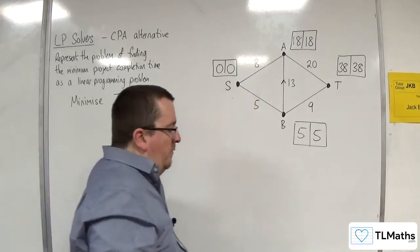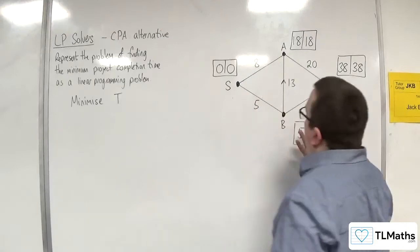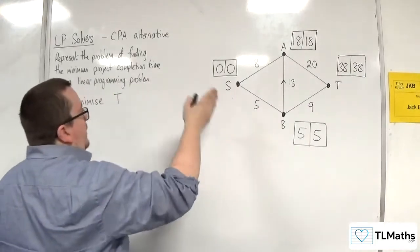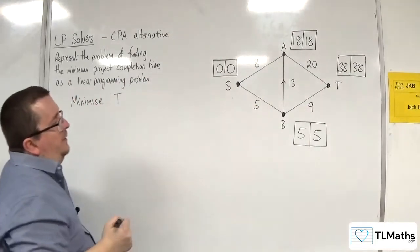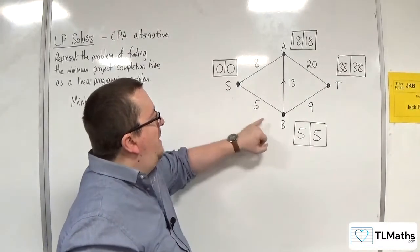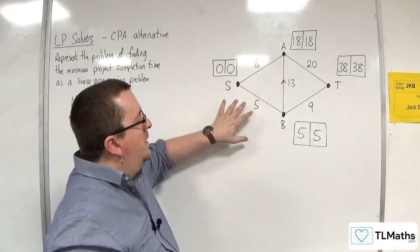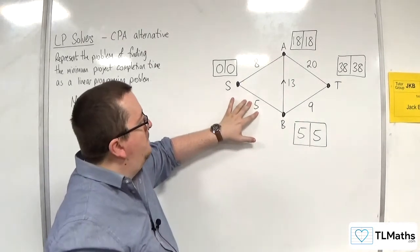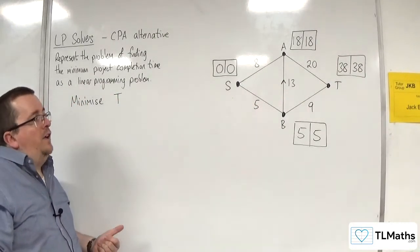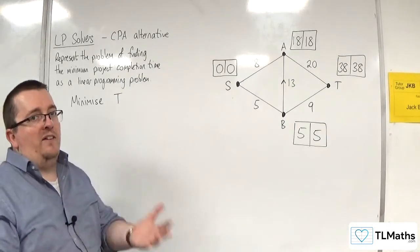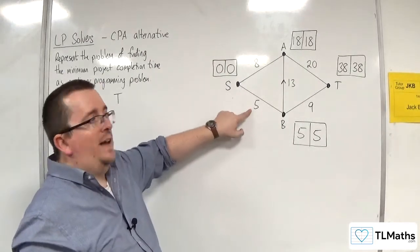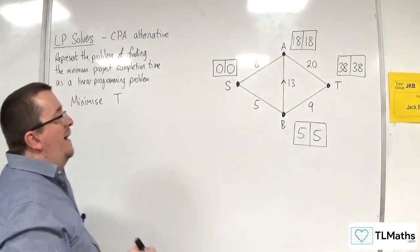Now what we do next is we kind of work our way through the network, considering each of the vertices in turn. So starting at S, let's go to B first. Now B, because of SB being 5, so that job takes 5 hours or something like that. Then we can only get to B after at least 5 hours have been completed. So at least 5 hours need to have been completed in order to achieve that job there. So the value at B...